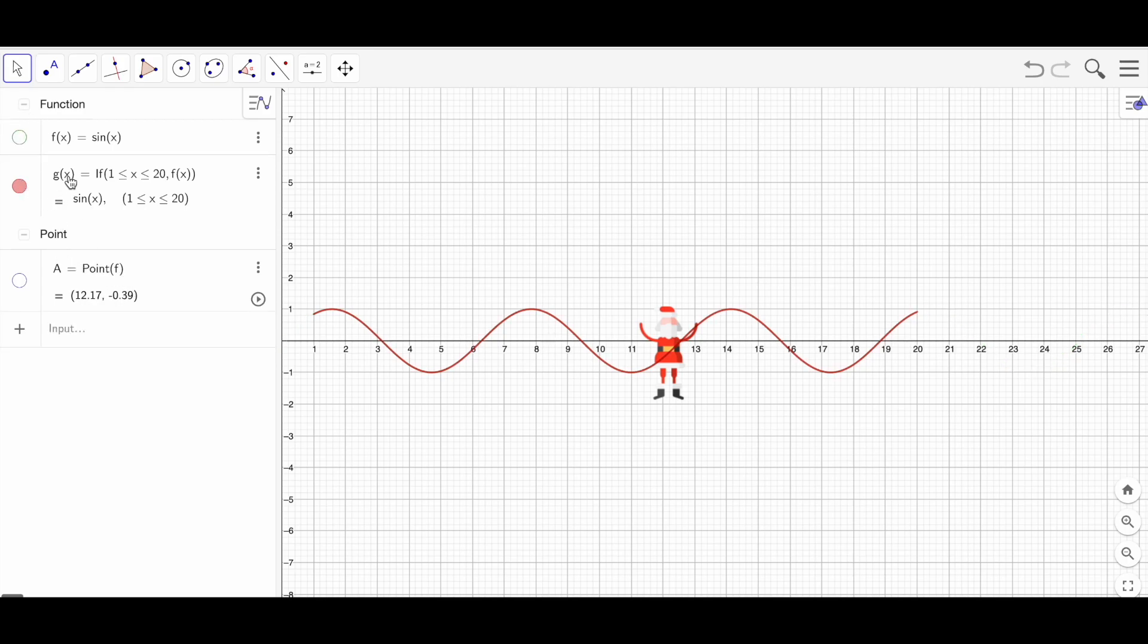Now my function is g, not f. So here I'm going to click on A and change it to g. Now you can click on animation, you can hide g as well. What is going to happen is Santa is going to go from 1 to 20. Look, it's going to stop there, then it can restart.